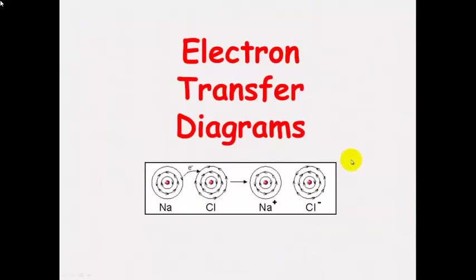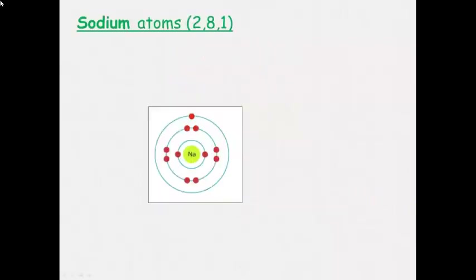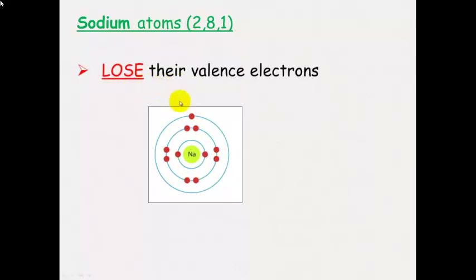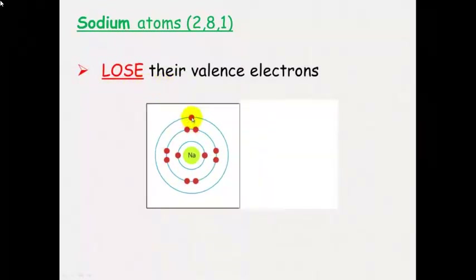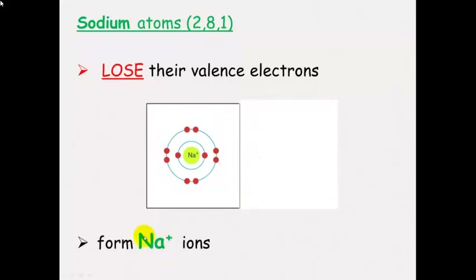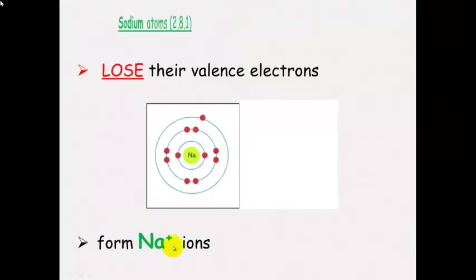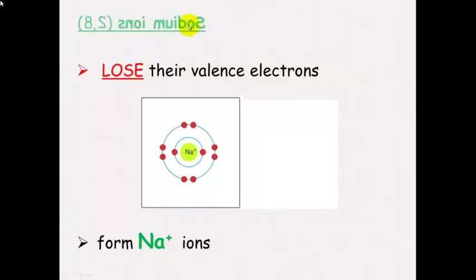We can demonstrate this using electron transfer diagrams, and this is how ionic bonds form between ions. A sodium atom has an electron configuration of 2, 8, 1. It wants to lose its valence electron — it's in group 1 so it wants to lose that one electron. That electron disappears and it forms a sodium 1 positive ion, which now has a 2, 8 electron configuration.